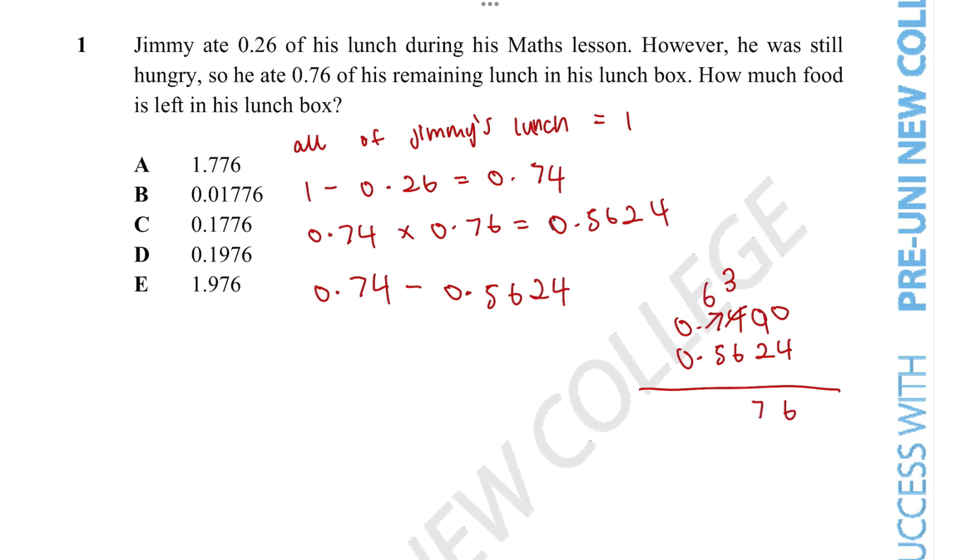We can't do 3, so we have to go 6. 10 minus 6 is 4, plus 3 is 7. And 6 minus 5 is 1, and 0. So the answer would be C, 0.1776.